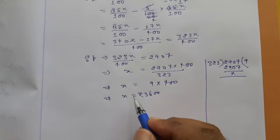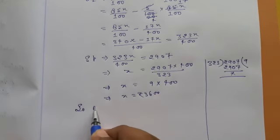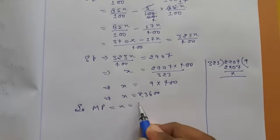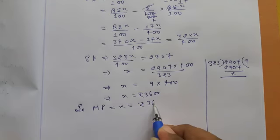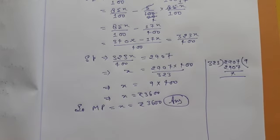And what is X? X we have considered earlier as the mark price. So mark price equals X equals rupees 3,600. This will be our final answer for this question.